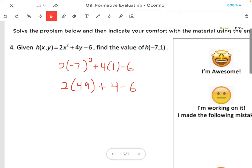Here I could plug that into my calculator, or we could just double 49, which is 98, plus 4 minus 6. And then going from left to right, 98 plus 4 would be 102, and minus 6 would be 96.